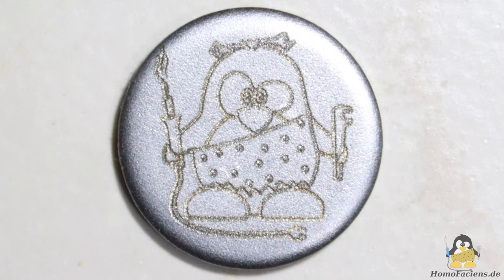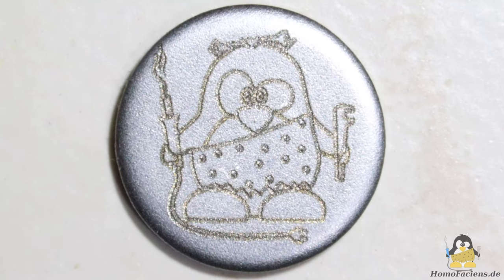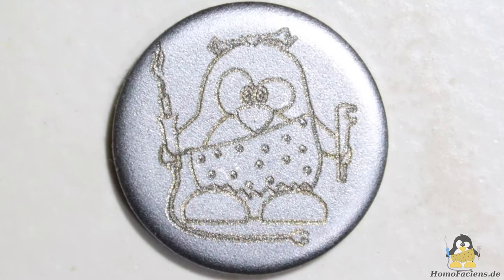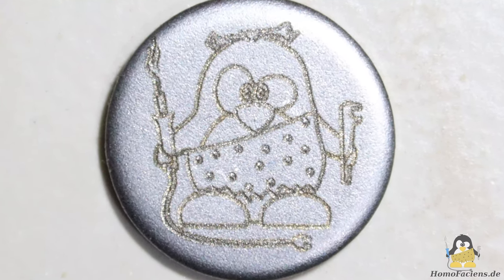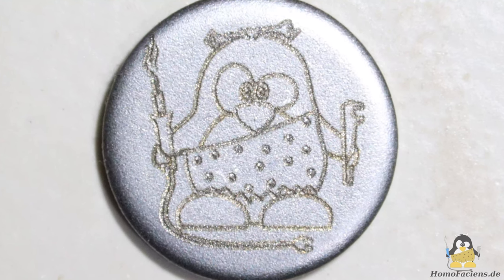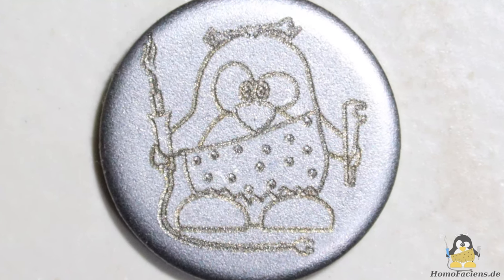The result is significantly better than attempt number one. The short welding of the electrode wire to the workpiece cannot be seen in the finished engraving. The lines have been clearly transferred from the template to the steel disc.